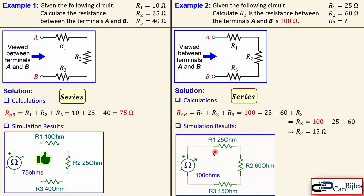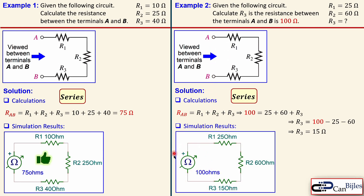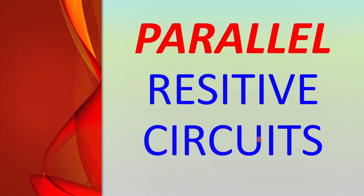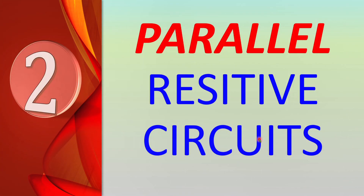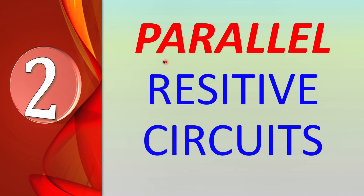Let's look at the simulation result. The ohmmeter in the SPICE simulator shows the circuit with R3 = 15 ohms as calculated, alongside the other resistors of 25 and 60 ohms, and indeed the total is 100 ohms — verified.